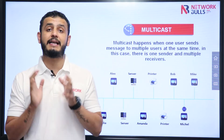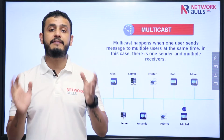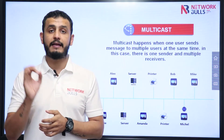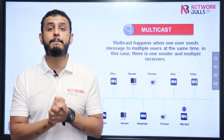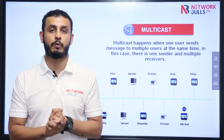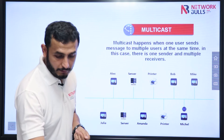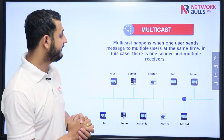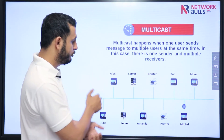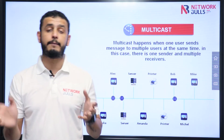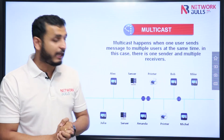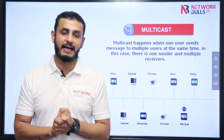Now we have multicast. Multicast means one to many communication, when there is only one sender and multiple people are receiving the same information in the network. Like you can see here, Michael is the sender, but Bob, Alex, and Julia are receiving the information. So this particular type of communication is called multicast.